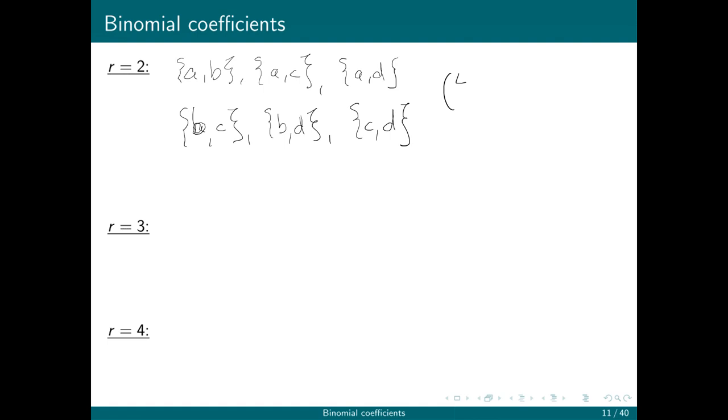So we're going to have 4 choose 2. It is 4 factorial over 2 factorial times 2 factorial, which we already knew was 6.